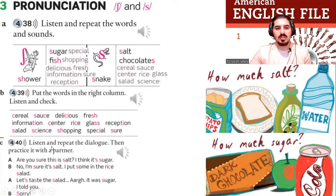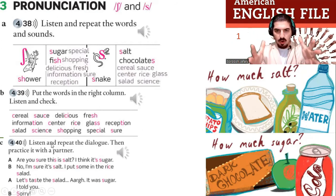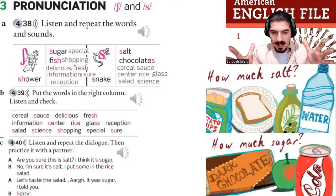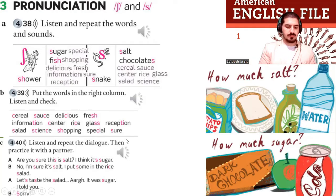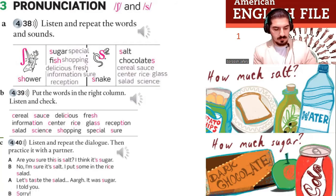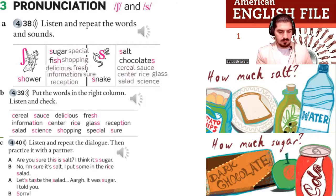Now I want you to listen and repeat the dialogue, then practice with your partner. Are you sure this is salt? I think it's sugar. No, I'm sure it's salt — I put some in the rice salad. Let's taste the salad. Ah, it was sugar! I told you. Sorry. Practice it with your partner.